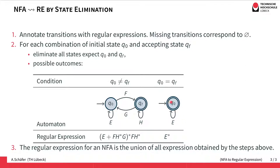On the other hand, if the initial state is also accepting—they are the same—then we just end up with one state and an expression E. The regular expression for this automaton is E star, because we can take the E loop a couple of times. This approach has to be done for all possible combinations of initial state and accepting state.